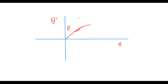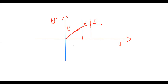We call it the knee region because of the shape of the knee — in this phase the variation of B becomes non-linear with respect to the variation of H. The third phase is when B will not increase anymore; even if we increase H, B will not increase, and we call this the saturation region. Here all the domains get aligned with the direction of the magnetic field.